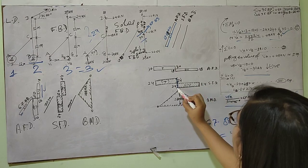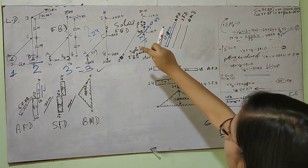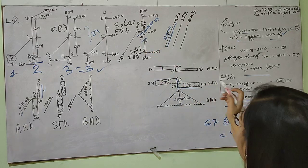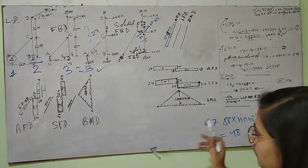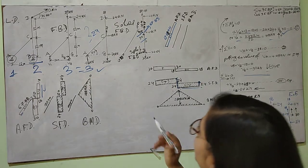Again you go straight, and here a load of 24 kilonewtons is acting, so it is going to be 0 here. So at this point it is 0, confirming our shear force diagram is correct.